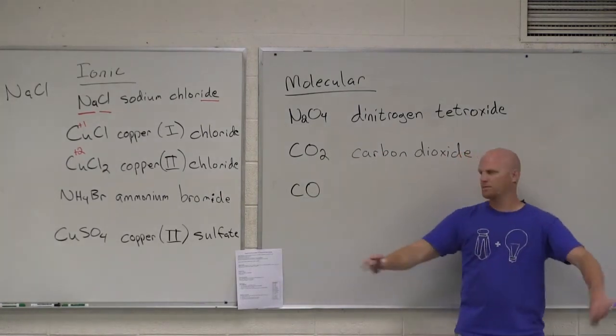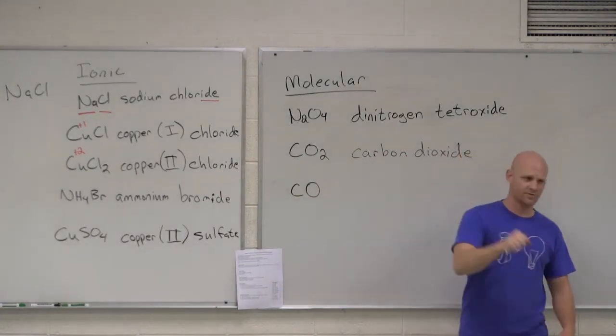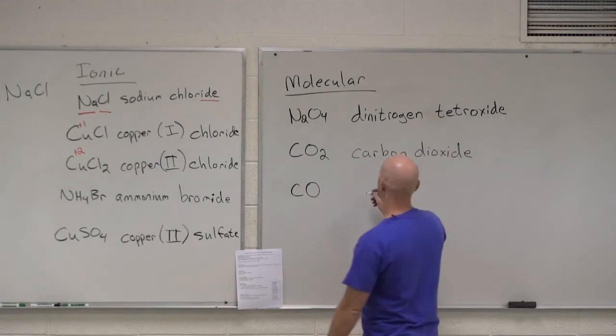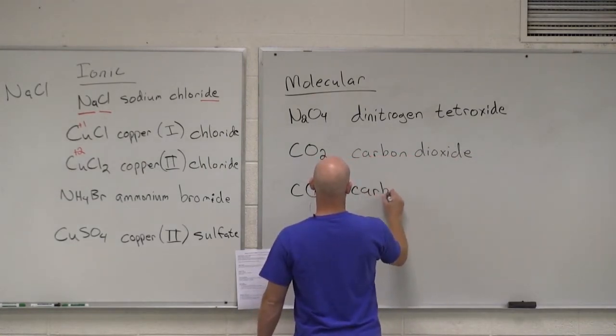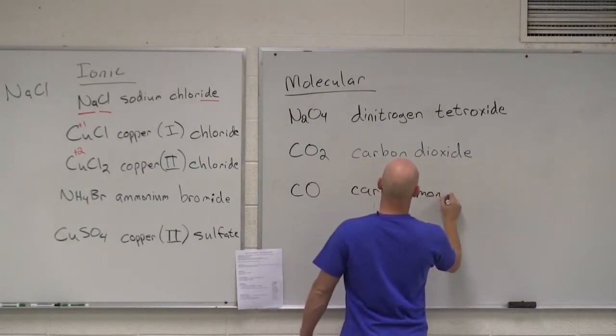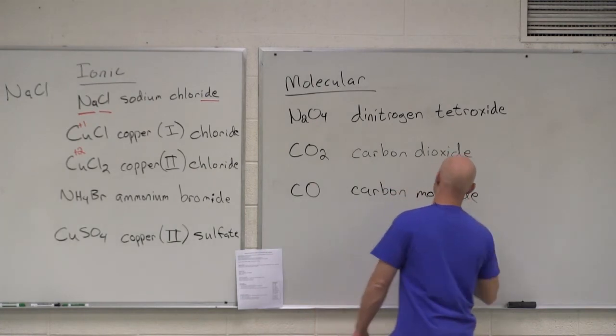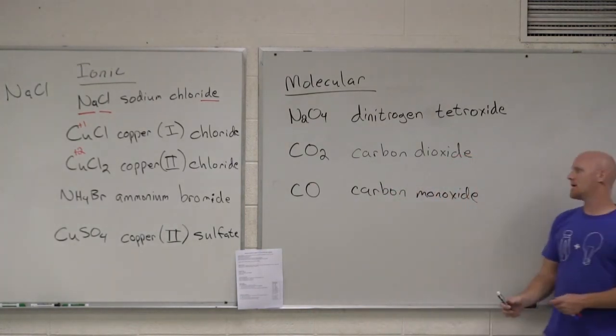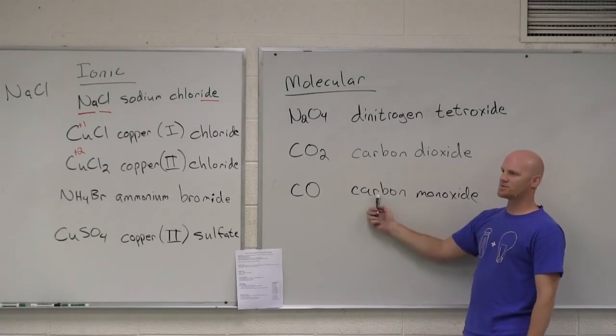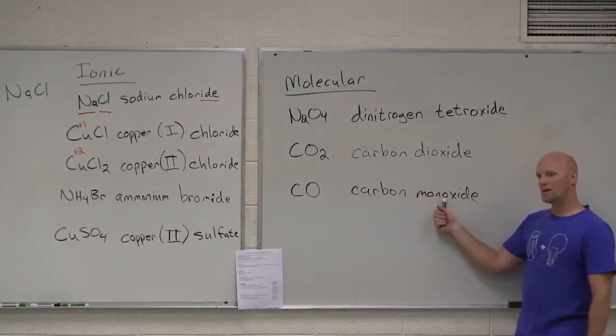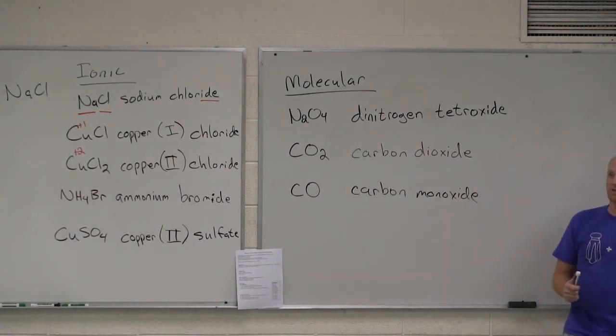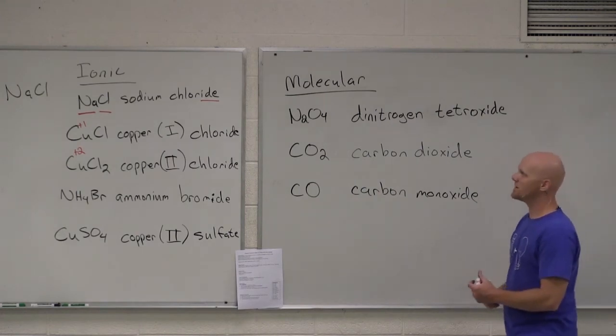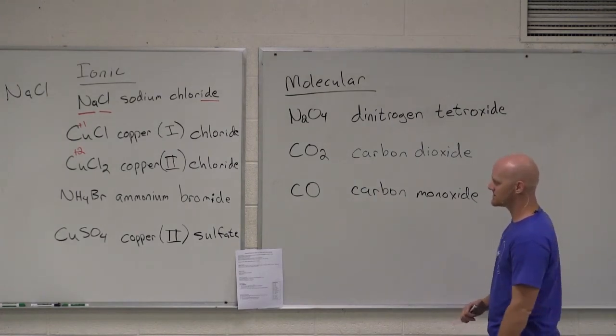Then they decided let's make this even harder. If you only have one of the first element, no mono. But if you only have one of the second element, you have to include mono. Why? Because they're just trying to trick you here. So carbon monoxide. Again, only one of the first element, no mono. If there's one of the second element though, you have to include the Greek prefix mono, just to make this trickier and harder.